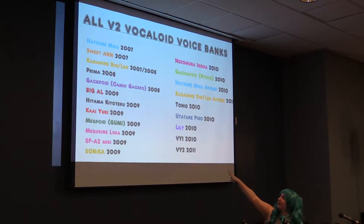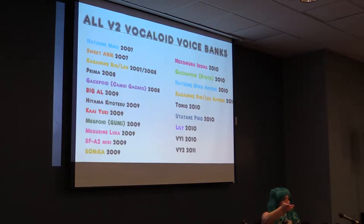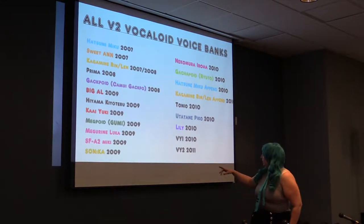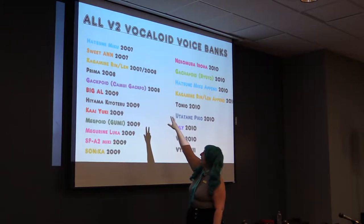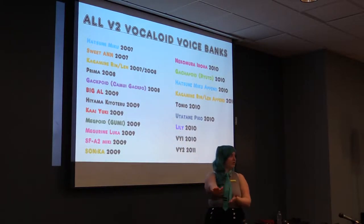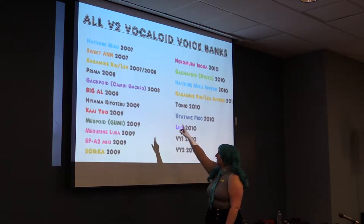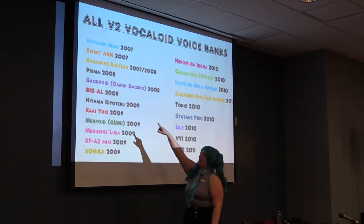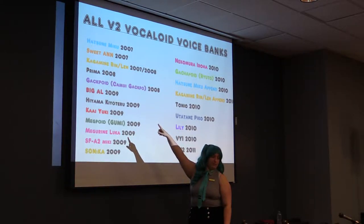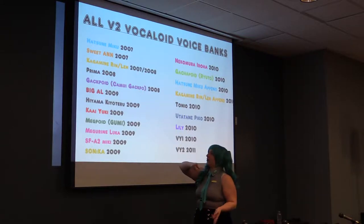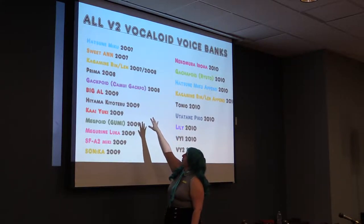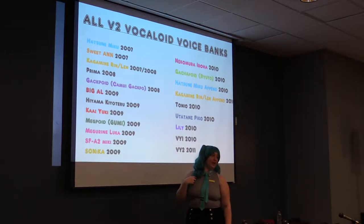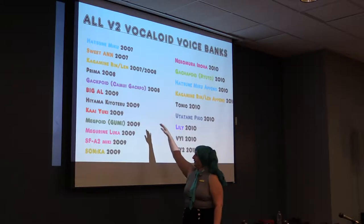Here are all the V2 engines that were released. V1 was just Meiko, Kaito, Leon, Lola, and Miriam. In V2, there are a lot more. In release order: Miku and Sweet Anne, then Rin and Len — who had two releases because their first was pushed out so fast there were bugs, so they released an update in 2008. Prima was an opera-type singer by Zero G Studios. Kamui Gakupo — the samurai one — was released by Internet Co., the same company that did Gumi.